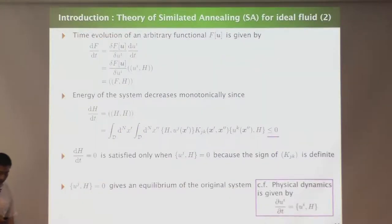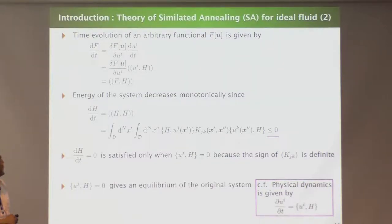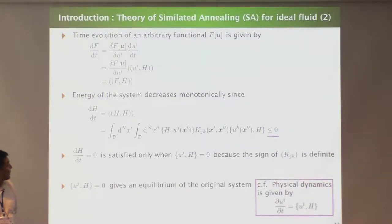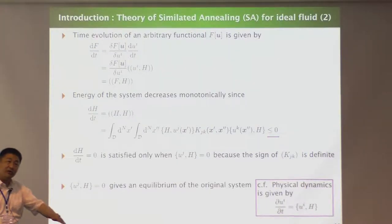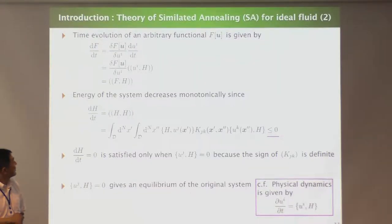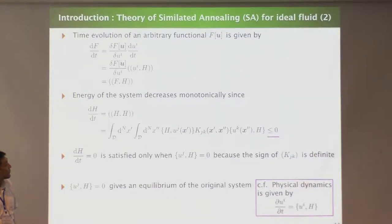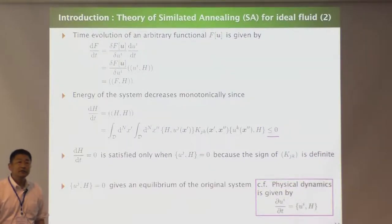Because of this bracket dynamics, the time evolution of any functional F is given by this double bracket between F and the Hamiltonian. If we input the Hamiltonian itself, we get this equation, and because the symmetric bracket is symmetric and the kernel has a definite sign, the right-hand side is non-positive. Then the Hamiltonian decreases monotonically, and when dH/dt equals zero, the Poisson bracket between the dynamical variable and the Hamiltonian must be zero — exactly the stationary state of the original system. This gives the equilibrium.